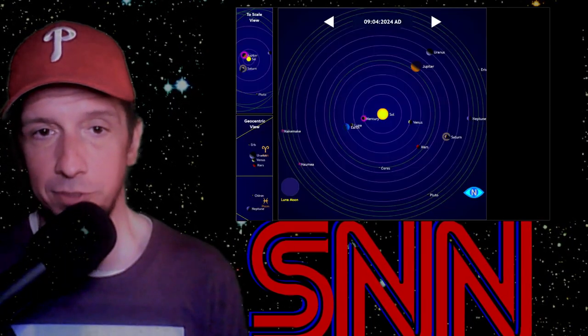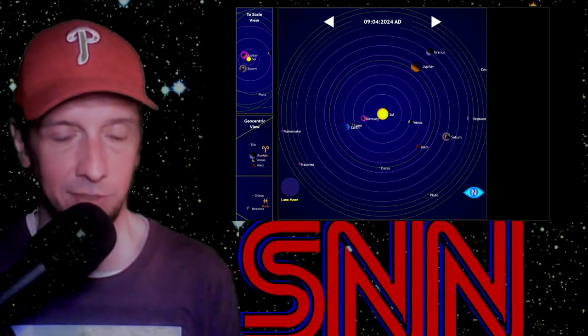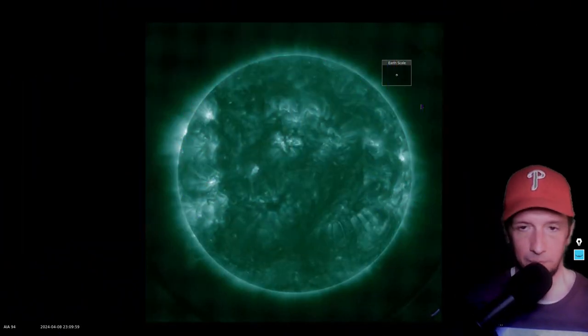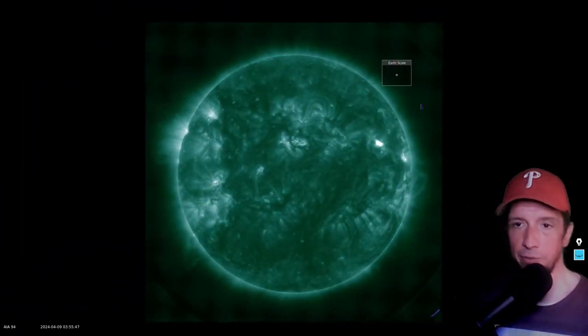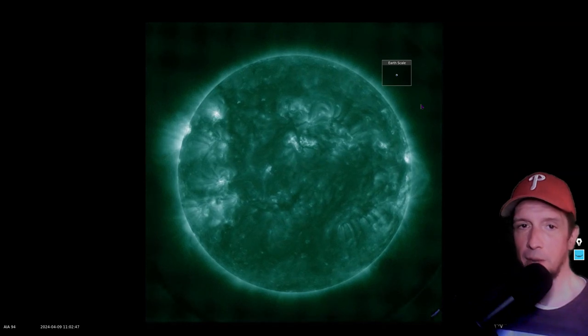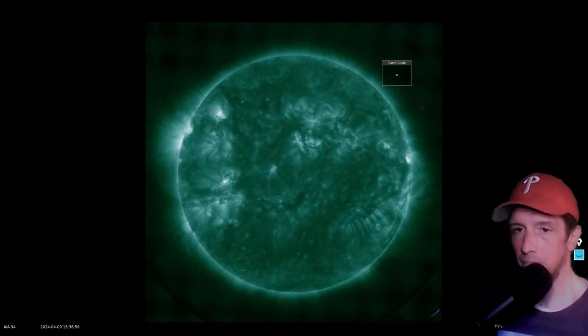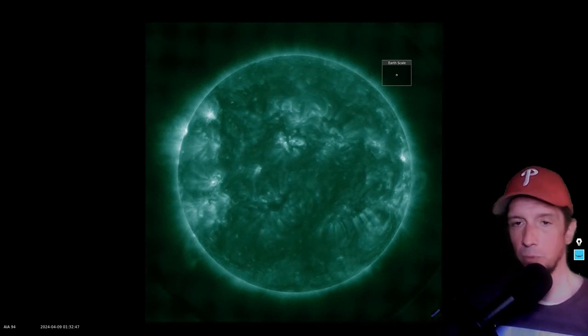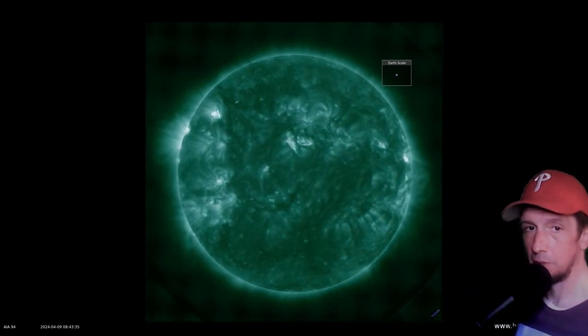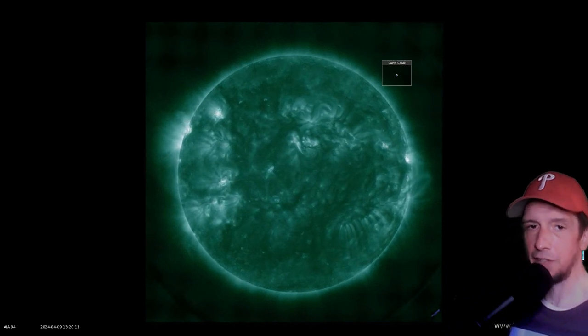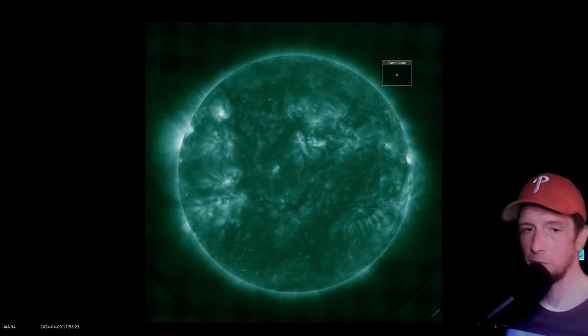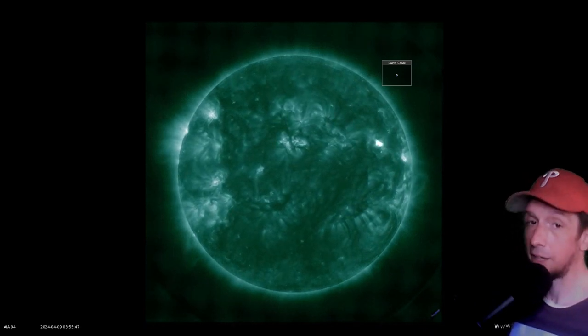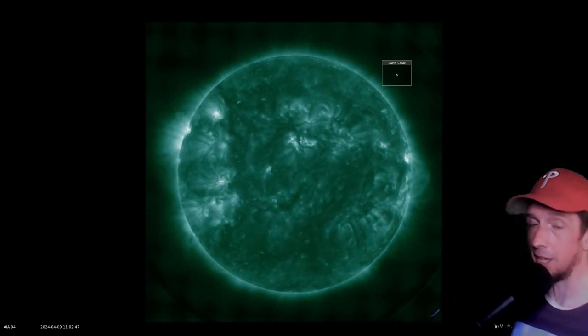Let's take a look at SDO once again. There's 94 angstroms and that C-class flare came from, I think it was in the northwest. Correct me if I'm wrong in the comments section. A little bit of activity in the northeast and a little bit of activity in the northwest. Besides that, things are quite chill. However, there are some quite active regions on the far side which should be rising in a couple of days.